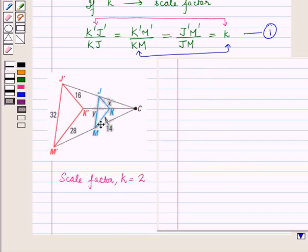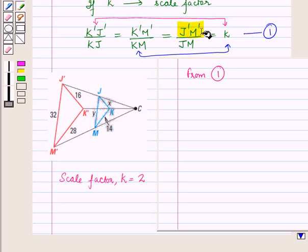Now let us find the value of y. Now again from equation 1 we have J'M'/JM is equal to k.